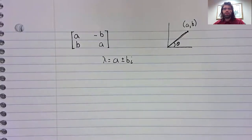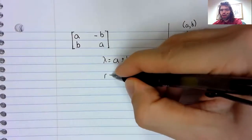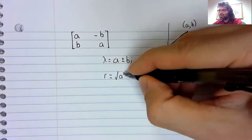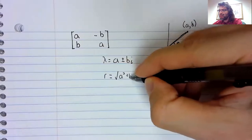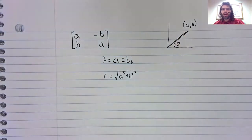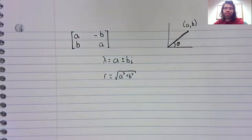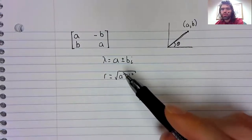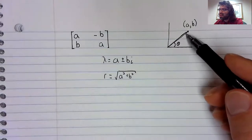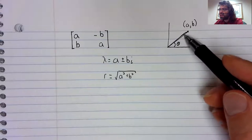We're going to define R equals the square root of A squared plus B squared. And we're getting very slightly ahead of ourselves, but you might already know what this is. This is the length of this line segment.